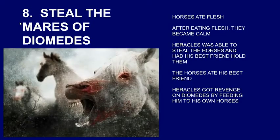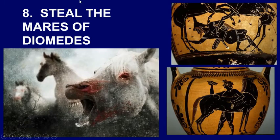The eighth labor of Heracles was to steal the mares of Diomedes. These mares were flesh-eaters — they ate people — but after eating flesh they became calm. Heracles was able to steal the horses and had his best friend hold them for a while, but the horses ate his best friend. That really made Heracles angry, so he got revenge on Diomedes by feeding Diomedes to his own horses. Here is Heracles wrestling with the wild horses, and then here he is petting a calm horse.